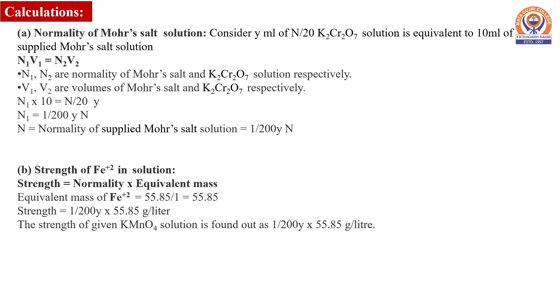After determining the normality of Mohr salt solution, the strength of ferrous ions can be calculated by multiplying the normality and the equivalent mass of ferrous ions. Since one electron change is involved, the equivalent mass of ferrous ions is equal to the atomic mass, which is 55.85. Strength of ferrous ions in the solution is represented in the units of gram per liter.